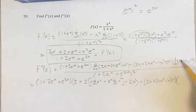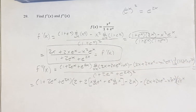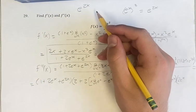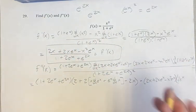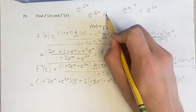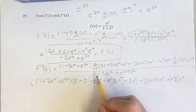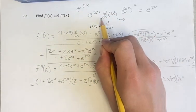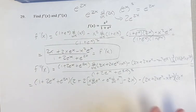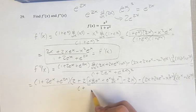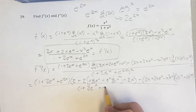Minus (2x + 2x·eˣ − x²·eˣ) times the derivative of the denominator. The derivative of 1 is 0, so we can ignore it. The derivative of eˣ is eˣ, and the derivative of e^(2x) — since the derivative of eˣ is itself but we also have to take the derivative of the exponent — the derivative of 2x is 2, so it's 2e^(2x). This gives us 2eˣ + 2e^(2x).